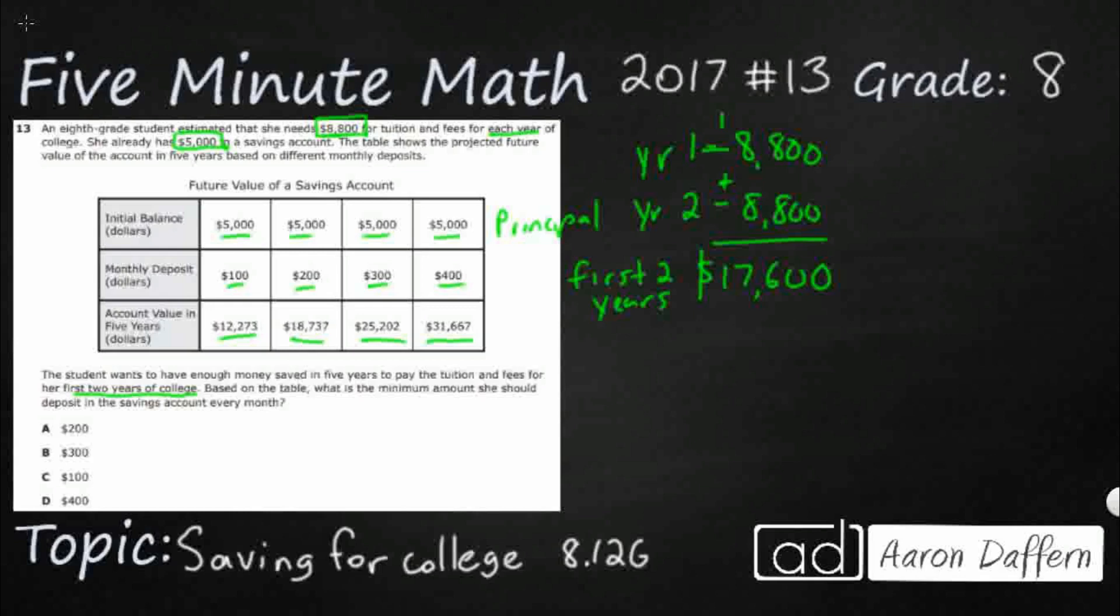Now, $17,600, that's not an answer because it's not asking how much money we would need for the first two years. Let's go back and take a look at this question because it's going to be kind of tricky. Based on the table, what is the minimum amount she should deposit into the savings every month?